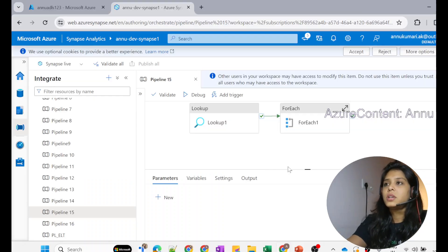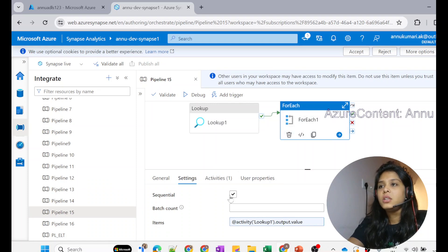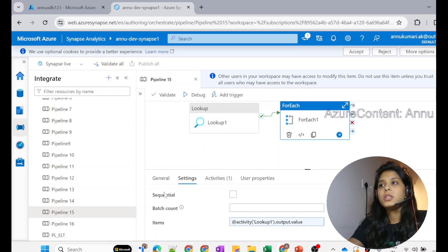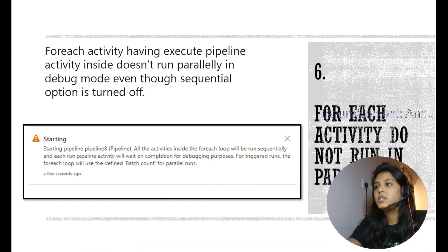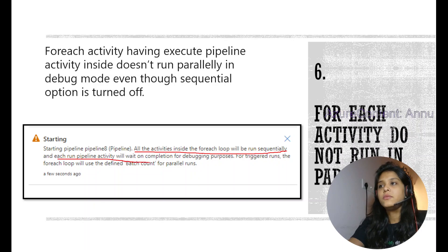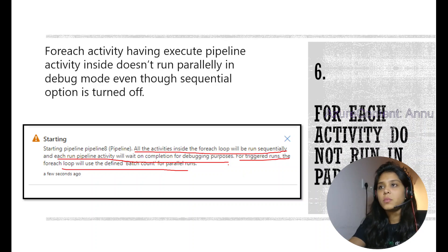If you turn on the sequential option inside the For Each activity, inner activities run in sequential order. If you do not turn on the sequential option, all activities will run in parallel. But sometimes, even though our intention is to run inner activities in parallel, we land up with a warning which says all activities inside the For Each loop will run sequentially, and each run pipeline activity will wait on completion, for debugging purposes.